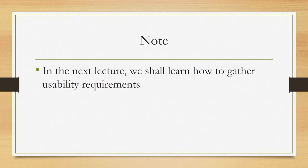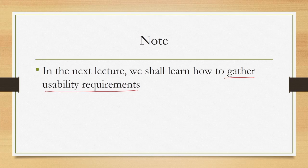So we have got some idea of what we want to gather: we want to gather usability requirements, which is one sort of non-functional requirement. Non-functional requirements are of many types; usability is only one of those, but as we have seen, we need to specify non-functional requirements properly so that we do not face issues later. In subsequent lectures we will see what we can do to identify usability requirements, focusing only on usability requirement gathering rather than other NFRs.